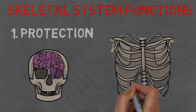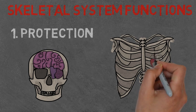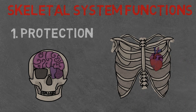Rib cage, which protects the heart and lungs. And finally, the spinal column, which protects the spinal cord.